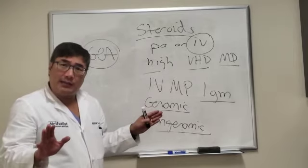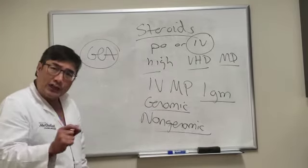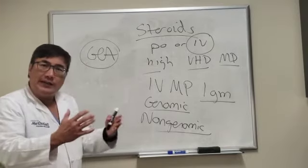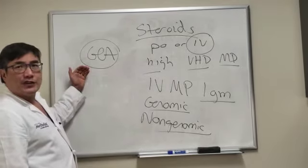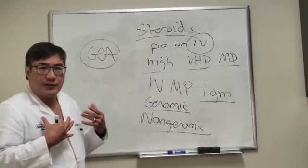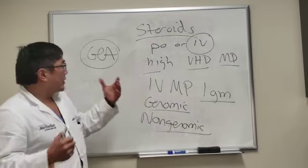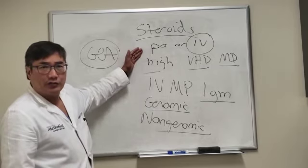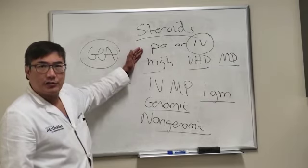However, because we believe there are other non-genomic effects at play — including neuroprotection, membrane stabilization, and improvement in function — for diseases like giant cell arteritis with vision loss, we are going to choose intravenous methylprednisolone for theoretic reasons, even though there has not been a good head-to-head IV versus oral steroid trial to answer this question.